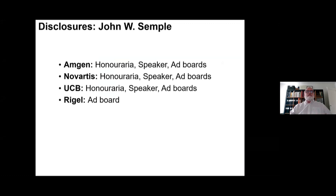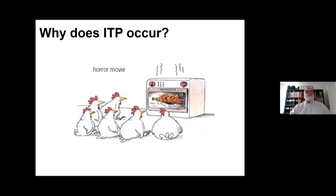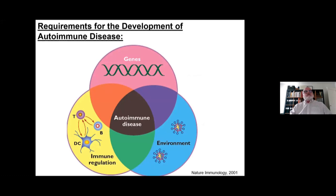These are my disclosures here. So why does ITP occur? I wanted to show you that there is a requirement for the development of autoimmune disease. This is a Venn diagram showing that there are three major components of autoimmunity.